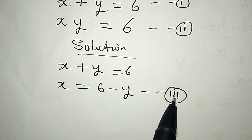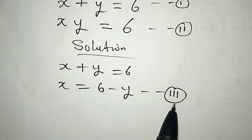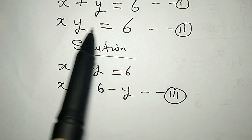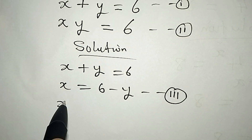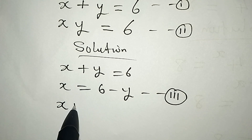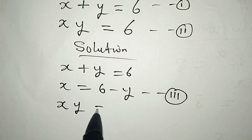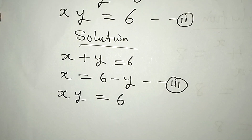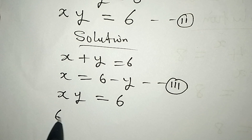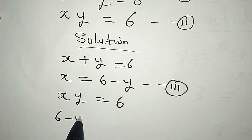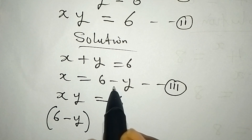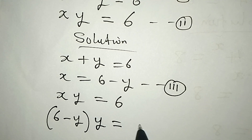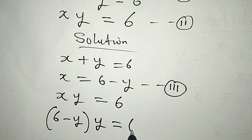Since equation 1 gave us equation 3, we put equation 3 into equation 2. Now equation 2 is x times y equals 6. What is x? x is 6 minus y. Then this y outside will still come, and this is equal to 6.